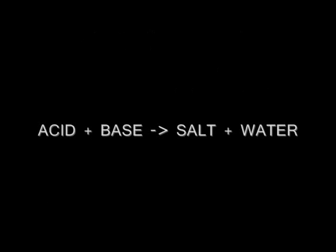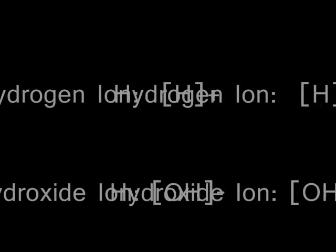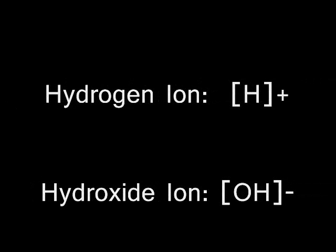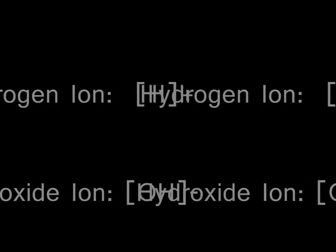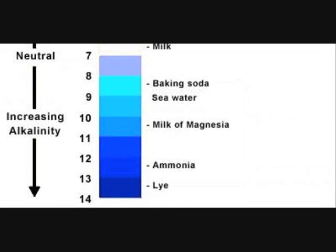When acids and bases react, they form water and a salt. The strength of both acids and bases is dependent on their concentration of hydrogen and hydroxide ions. The greater the concentration of hydrogen ions, the stronger the acid. The greater the concentration of hydroxide ions, the stronger the base.